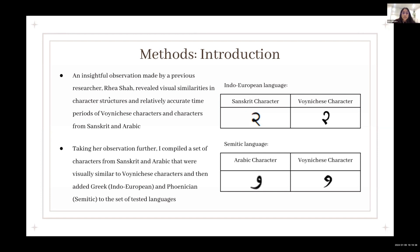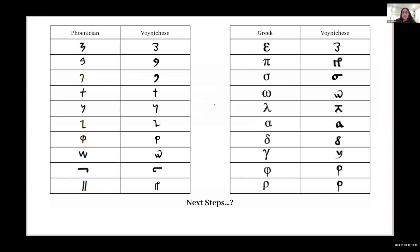And then to add more languages to the study, I added another Indo-European language, which was Greek, and then I added another Semitic language, which was Phoenician. So here's a list of the Phoenician and Greek characters that I found similar across each language.